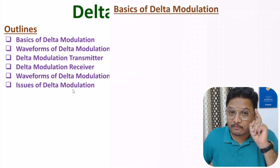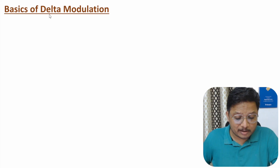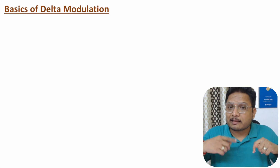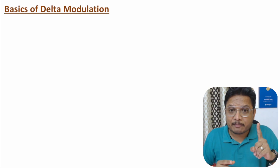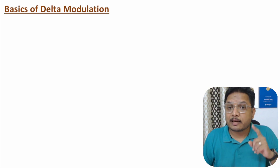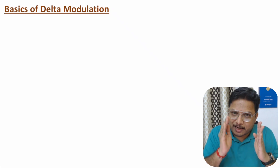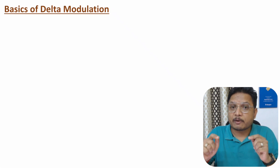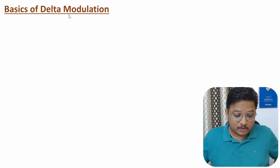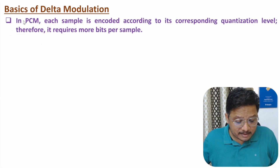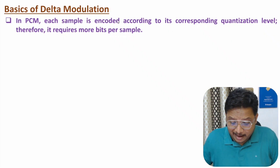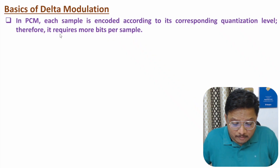So let us start with the first agenda: basics of Delta modulation. In this video lecture series, in my earlier videos, I have explained PCM and differential PCM. In PCM, we perform sampling first, then quantization, then encoding. In the quantization process of PCM, we encode each and every sample according to its corresponding quantization level. That's why it requires more bits per sample.